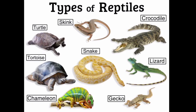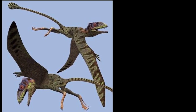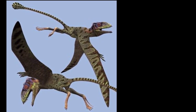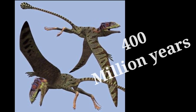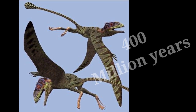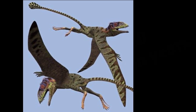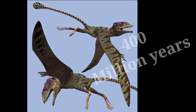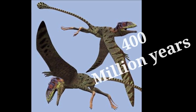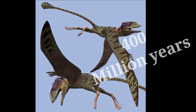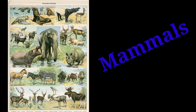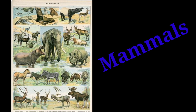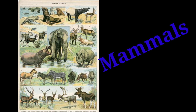Not all reptiles became birds — only a few species did. All these diversified life forms took about 400 million years to evolve. The mammals evolved about 200 million years ago.